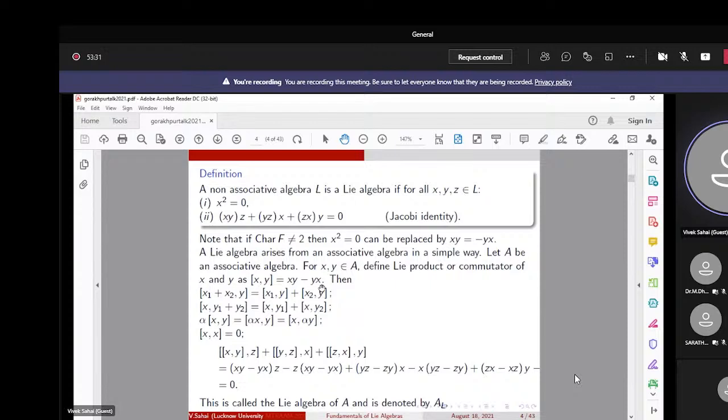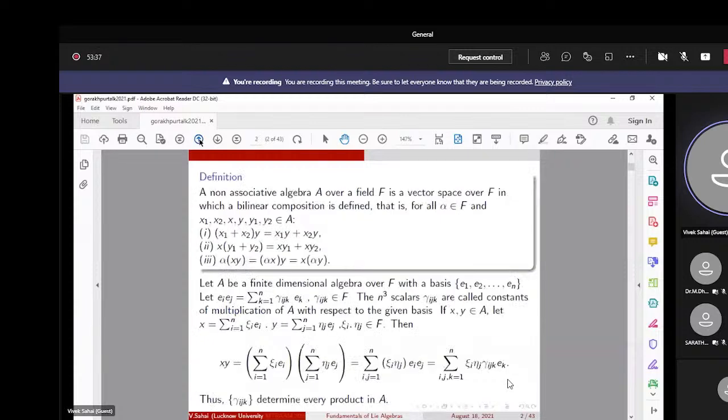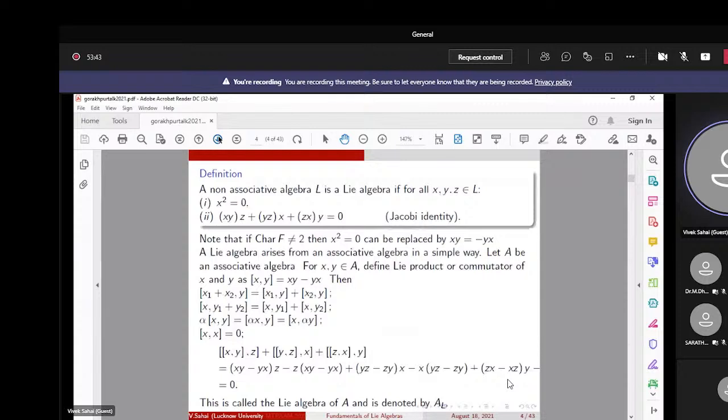It can be rearranged as [αx,y] and [x,αy]. Now we need to check these two properties: x² = 0 and the Jacobi identity. x² = 0 is trivial because if you put y = x, this is x² - x², which is zero.